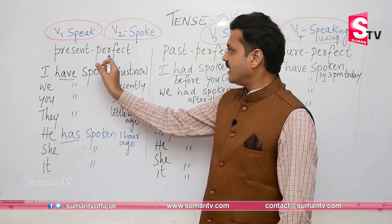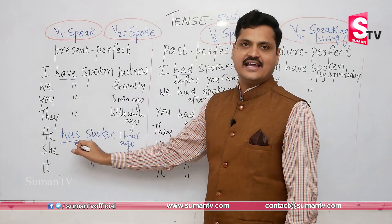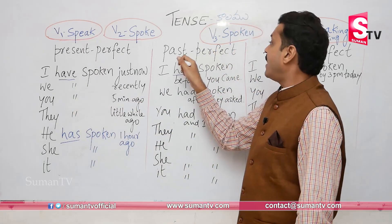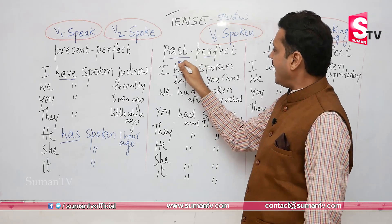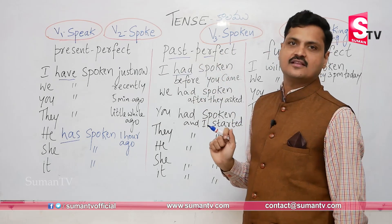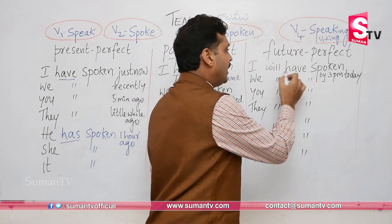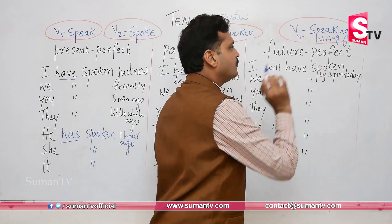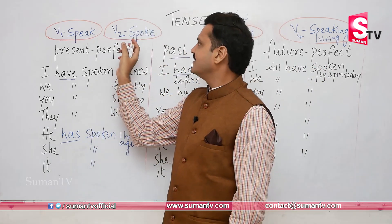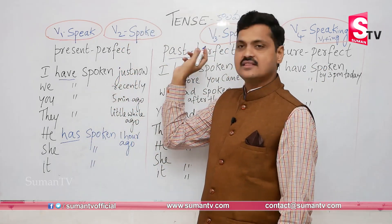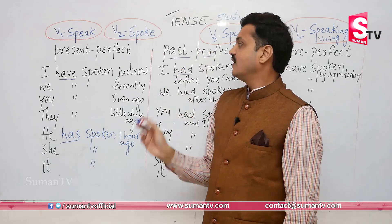So, in present perfect we use have or has as helping verbs. In past perfect we use had with V3. In future perfect we use will have with V3. For example: speak — V2 is 'spoke,' V3 is 'spoken.' Let's see when to use present perfect.